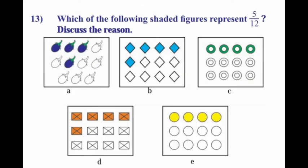Next, 13th main. Which of the following shaded figures represent 5 by 12? Discuss the reason. First one, observe, 5 should be shaded. So in the figures, look at B, 12 ali 5 are shaded. That is the one. Second one, look, 4 are shaded. So look at D, 5 are shaded out of 12. So D. E also, 4 are shaded. This is not the one. You should count like this and mark them.